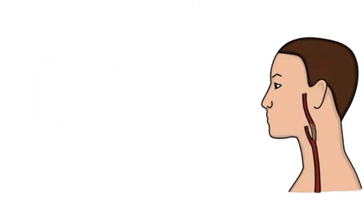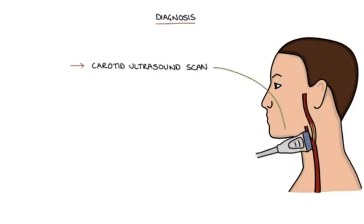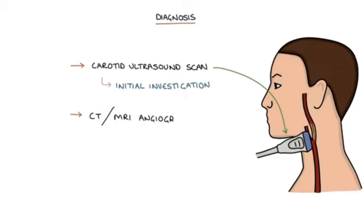A carotid ultrasound scan is usually the initial investigation to diagnose and assess carotid artery stenosis. A CT or MRI angiogram may be used to assess the stenosis in more detail before surgical interventions.